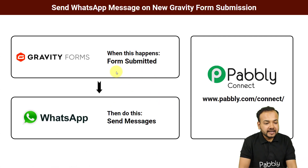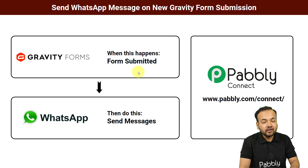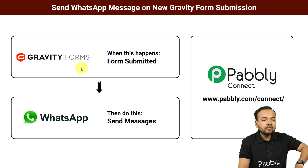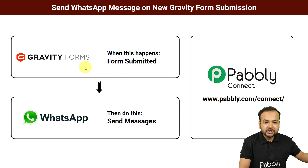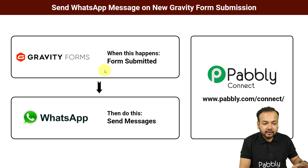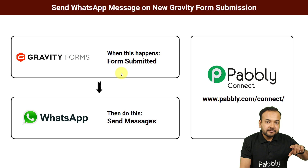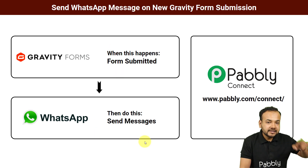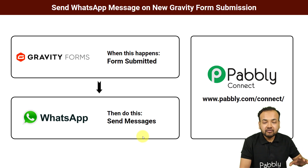Here is the flow of this automation: as and when any of your leads fills the form you created with Gravity Forms plugin on WordPress — and you can use any other form building application as well, like Google Forms, Typeform, JotForm, etc. — a WhatsApp message will be delivered to that lead automatically, without any manual effort.